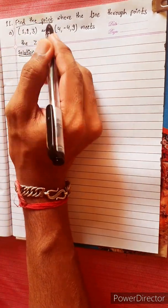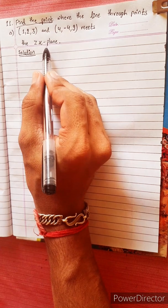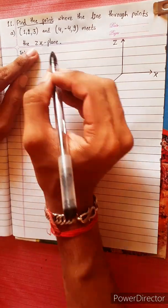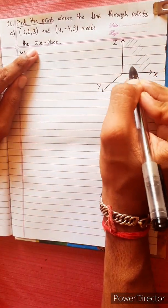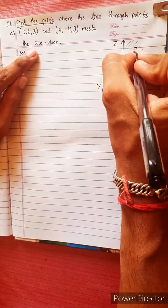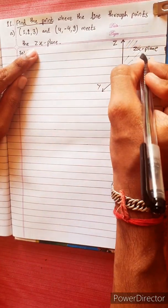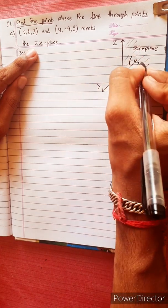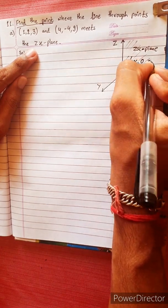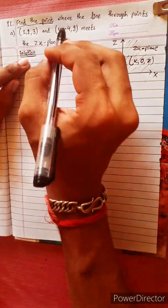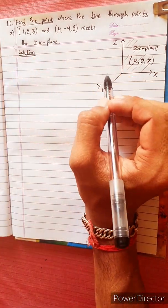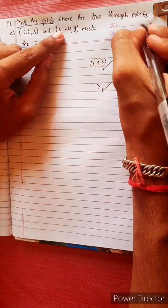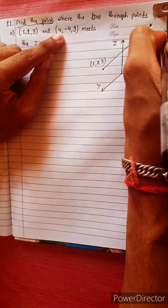Find the point where the line meets the plane. Suppose we have x-axis, y-axis, z-axis. The ZX plane — a point has an x coordinate, y coordinate, z coordinate. For the point (1, 2, 3), this point lies on this plane.